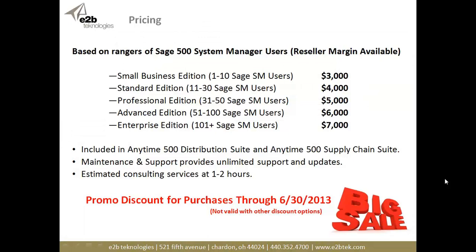From a pricing standpoint, pricing is based on the number of users you have within Sage 500 — the user licenses you've purchased from Sage. We have five editions, which are different from Sage's editions. Our small business edition covers one to ten Sage users; standard edition 11 to 30; professional edition 31 to 50; advanced 51 to 100; and enterprise 101 plus. You can see the pricing on the screen. This Document Management product is included in the Anytime 500 distribution suite as well as our Anytime 500 supply chain suite — discounted bundles of many products we offer.